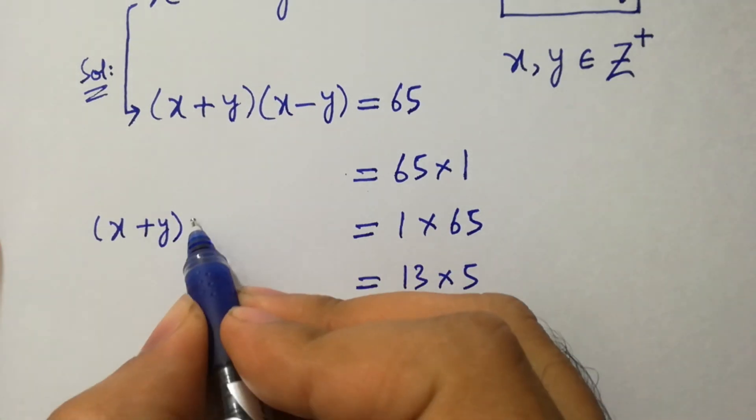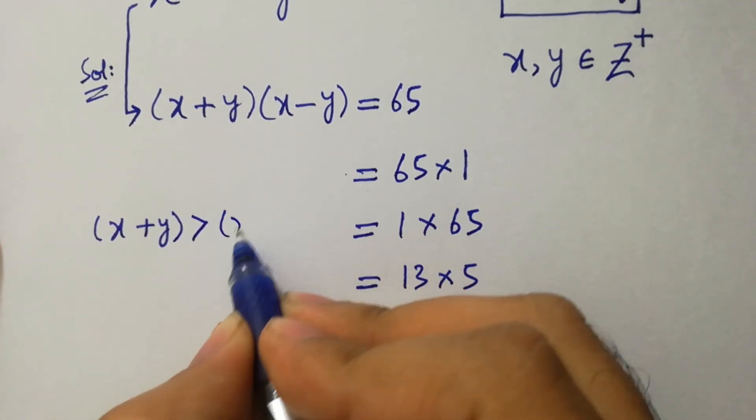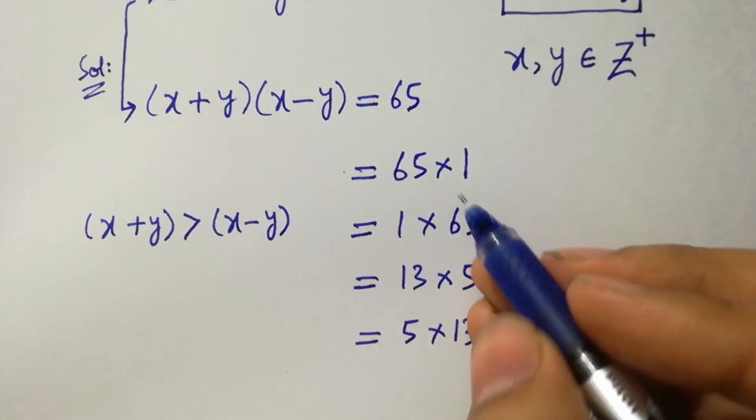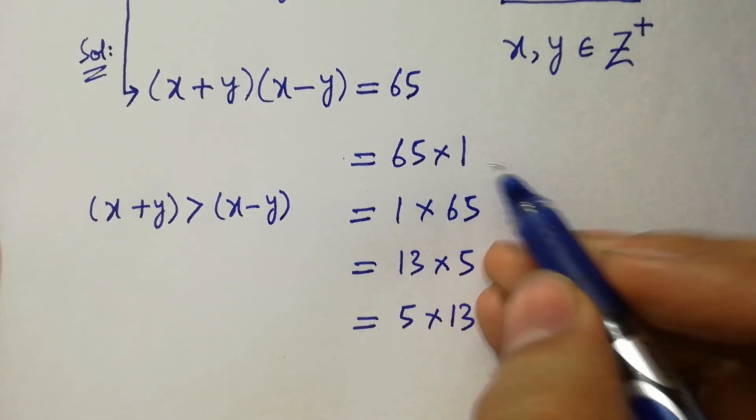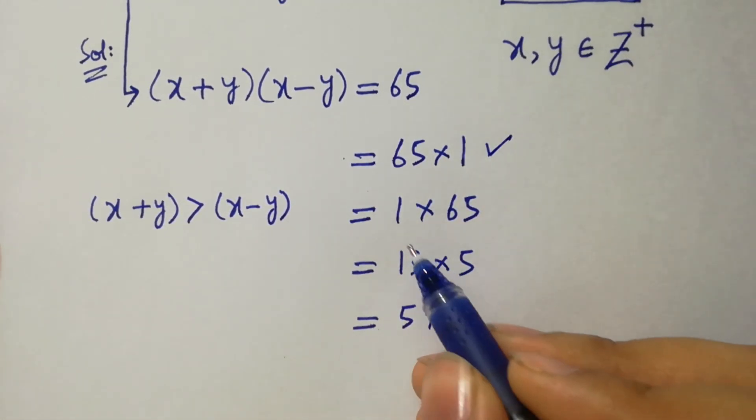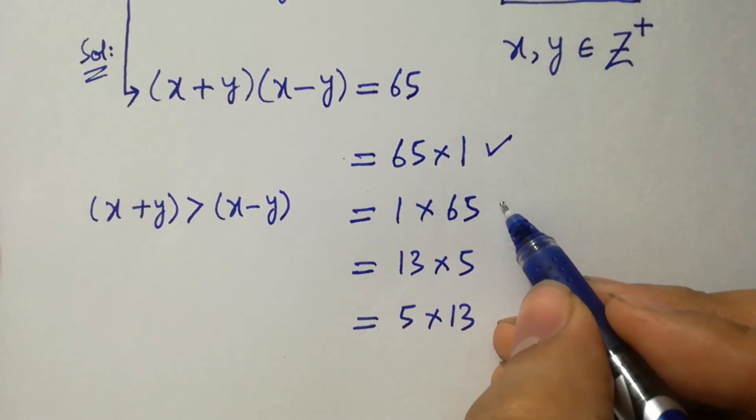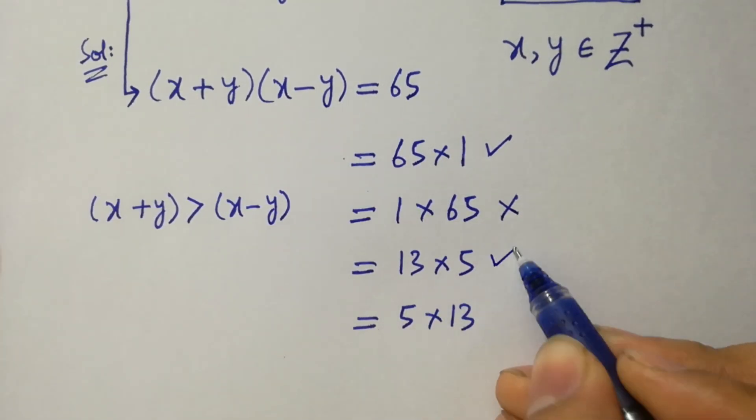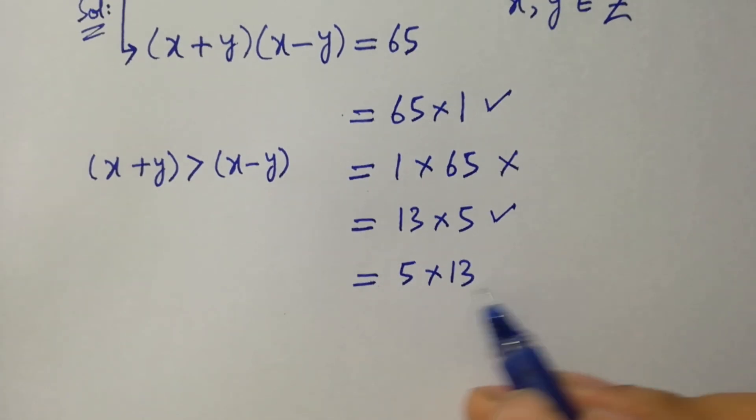x plus y is greater than x minus y. According to that, 65 is greater than 1, this is possible. 1 is less than 65, not possible. 13 is greater than 5, possible. 5 is less than 13, not possible.